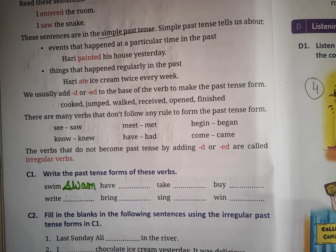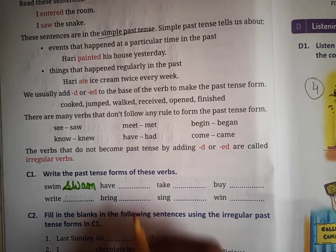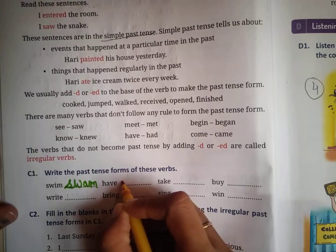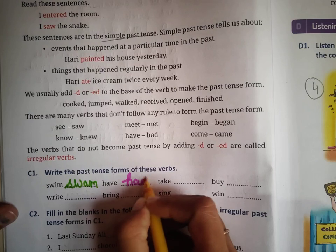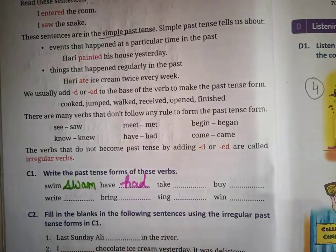Next है 'have'. Have का past हो जाएगा 'had'. तो क्या लिखेंगे? H-A-D, had.